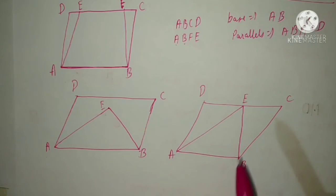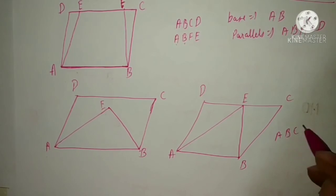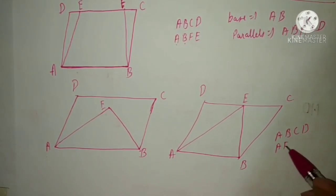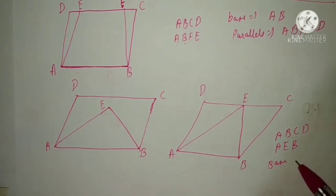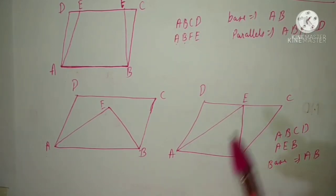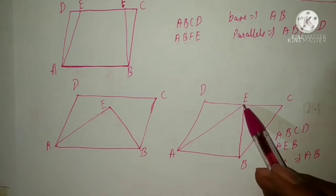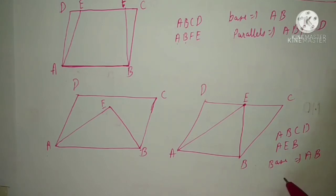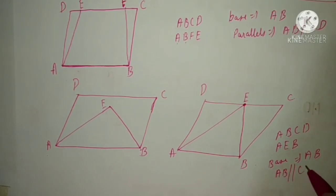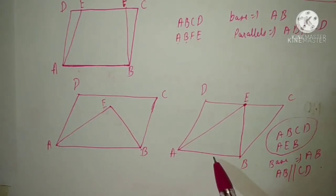Now see this one. The quadrilateral is ABCD and the triangle is AEB. The base of both figures is AB, which is common. They both lie between the same parallel lines — AB is parallel to CD — and vertex E also lies on the line CD, between these two parallel lines. So we can say that these two figures lie on the same base and between the same parallel lines.